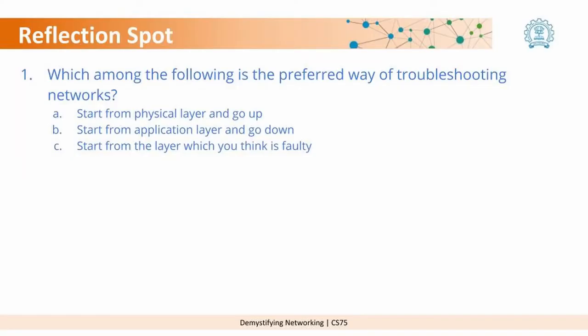At this point, we have a reflection question for you. Please pause, read the question, take your time to answer, and then proceed. Which among the following is the preferred way of troubleshooting networks? Option A: start from the physical layer and go up. Option B: start from the application layer and go down. Option C: start from the layer which you think is faulty.